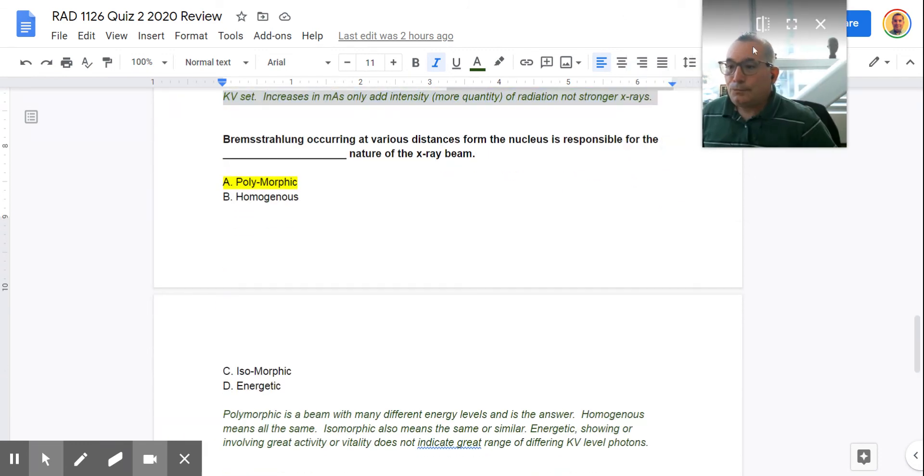Okay, Bremsstrahlung. Bremsstrahlung occurs at various distances from the nucleus, and is responsible for the polymorphic nature of the x-ray beam. Polymorphic means that the beam itself has many different energy levels. And we know this to be true. Some of those interactions are Bremsstrahlung, and we know that different photons are going to pop out of the tungsten atoms depending on how close the initial electron from the cathode gets to that nucleus and gets caught up in that electromagnetic force. So that Bremsstrahlung alone is going to give you a polymorphic beam.